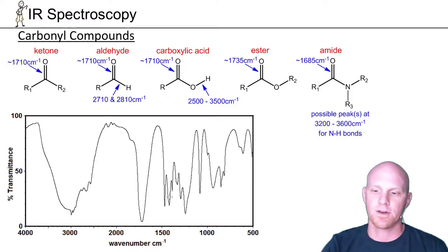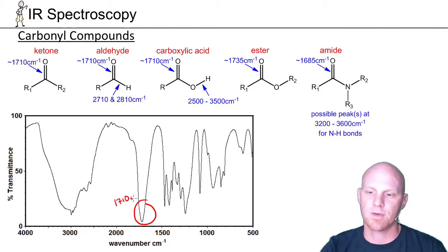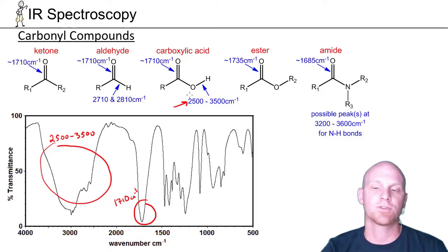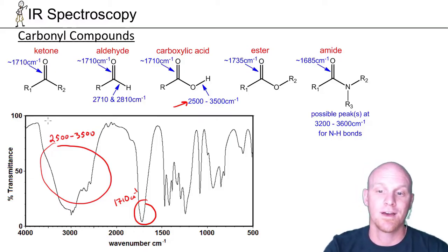Here we've got the spectrum of another carbonyl-containing compound. Another peak right above 1700, maybe close to 1710. But in this case, this should be a dead giveaway. You have this huge signal spanning the region from around 2500 to 3500. Dead giveaway, you've got a carboxylic acid. That's the OH of your carboxylic acid. It shows up and appears very different than the OH of an alcohol. We definitely have a carboxylic acid.